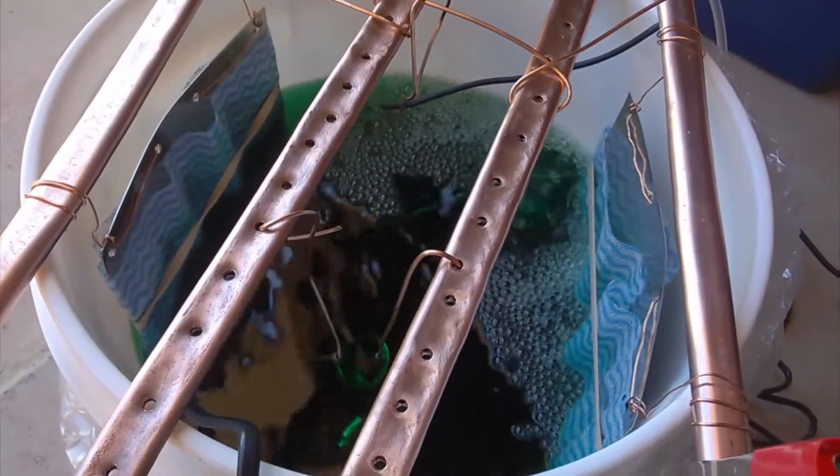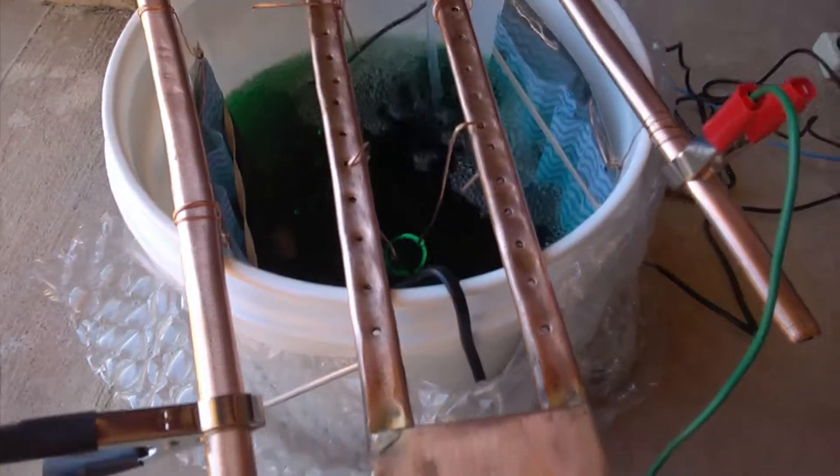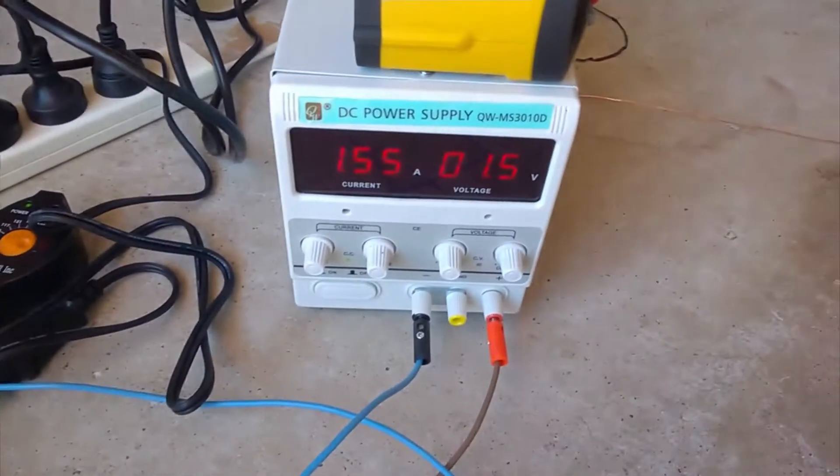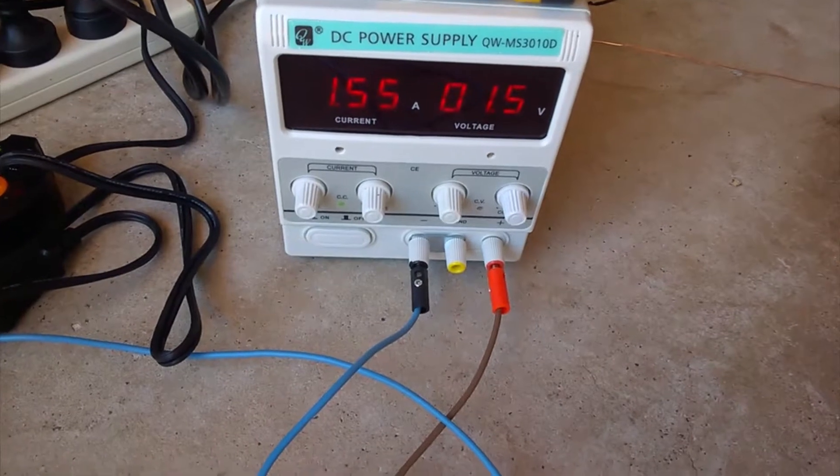As you can see now, we've started the plating. The plating is happening as we speak. As you can see, my power supply has started - you've basically got one and a half volts and 1.55 amps.